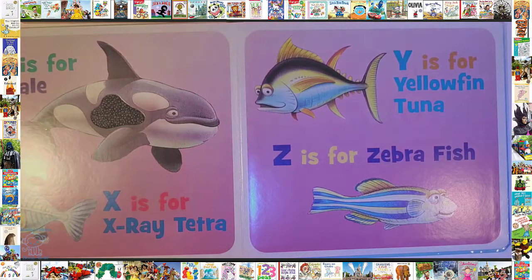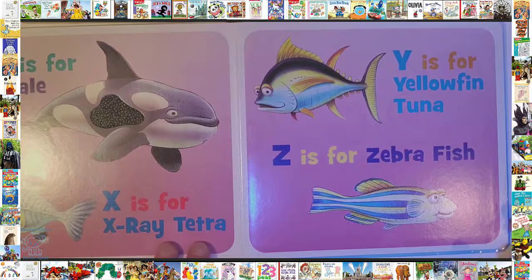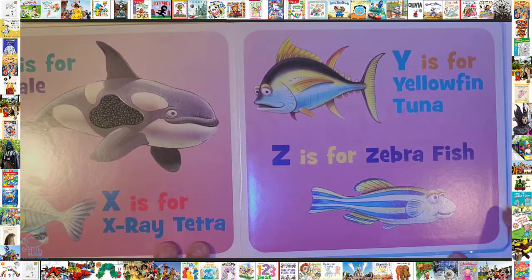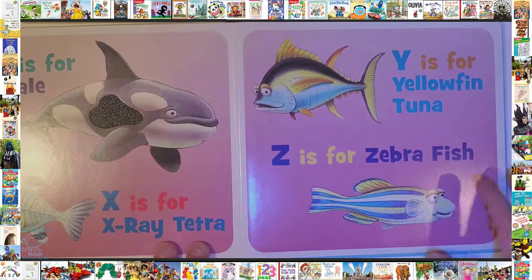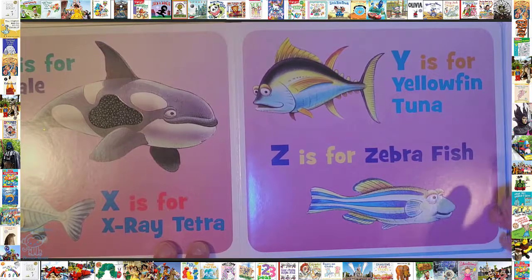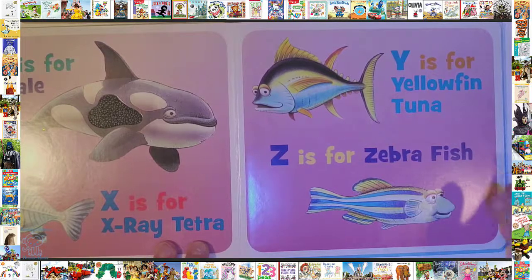W is for Whale. X is for X-Ray Terra. Y is for Yellow Toon-Out. Z is for Zebra Fish.